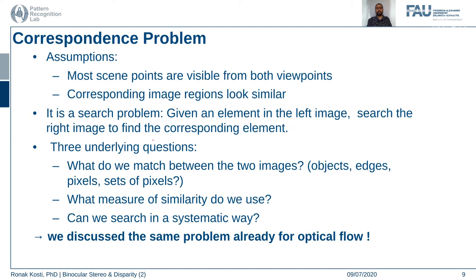Apart from this naive search problem, there are three underlying questions we need to ask when solving the correspondence problem. First: how do we match — what do we match between these two images? Do we match every pixel, every edge, every object, a set of pixels, a contour? Second: what kind of similarity measure are we using — mean squared error, absolute value, some form of correlation, a windowed approach? And third: can we search in a systematic way — can we design an algorithm that does it more efficiently while still achieving the same results?